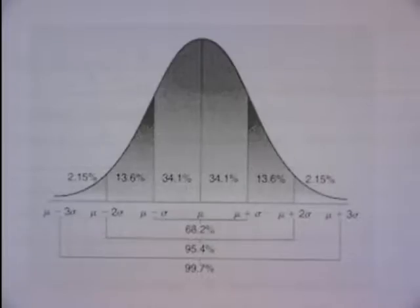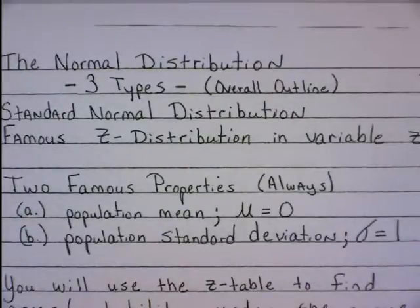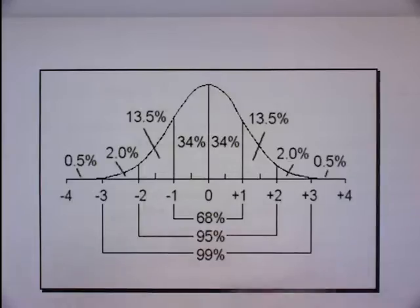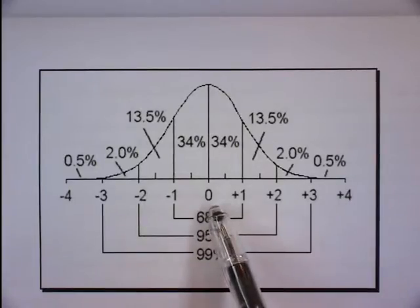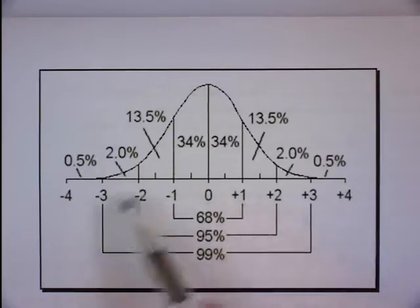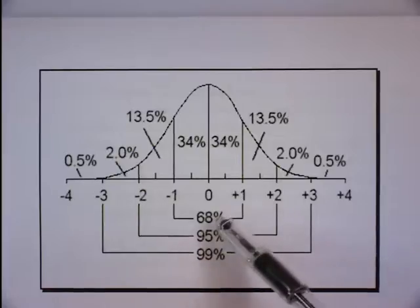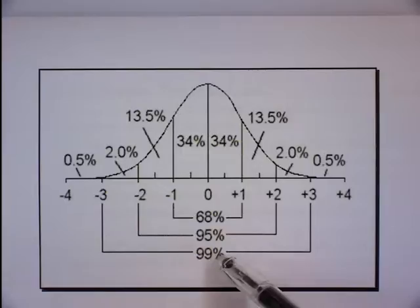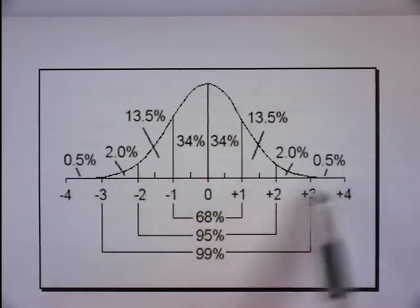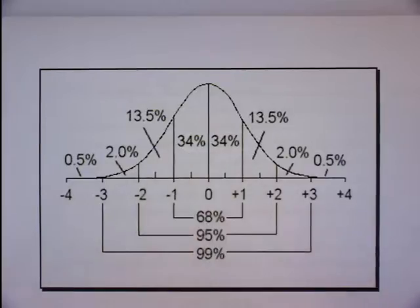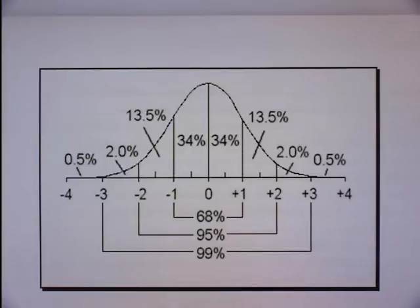The first distribution we'll speak about is the standard normal distribution, where the famous Z-table comes into play. The Z distribution follows the empirical rule, and we always know the numbers on the Z-axis: the mean is always zero and the standard deviation is always one. This shows 68%, 95%, and 99% — that's the empirical rule. Notice the symmetry: since 68% falls within one standard deviation, half of 68% is 34% on each side.